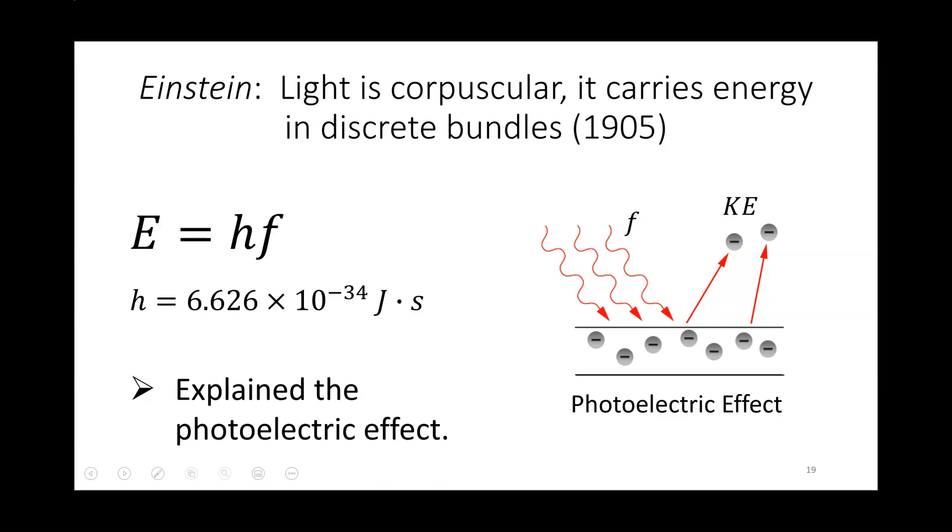We'll learn about this later in the class. Einstein was able to explain this in terms of thinking of the light as being made up of chunks of energy, almost particle-like, and he gave an equation for the energy of light in terms of a constant h, Planck's constant, times the frequency. So after Einstein, it was understood that you needed sometimes to use wave theory to understand light, but in other cases you would need to use a particle theory.